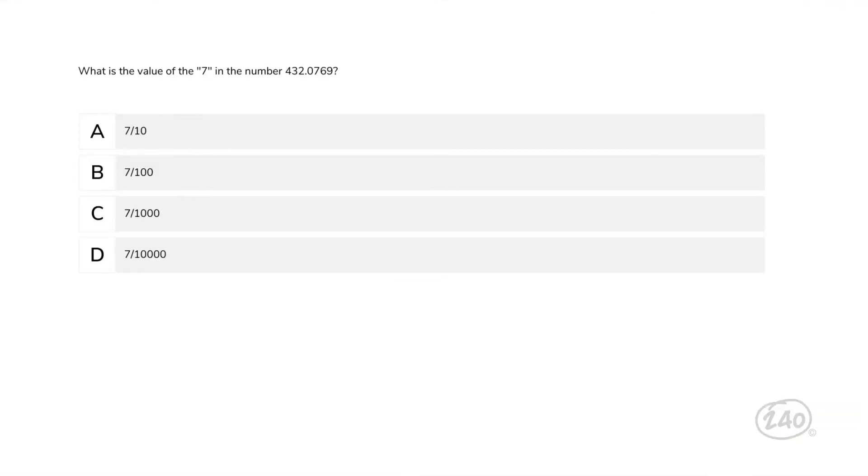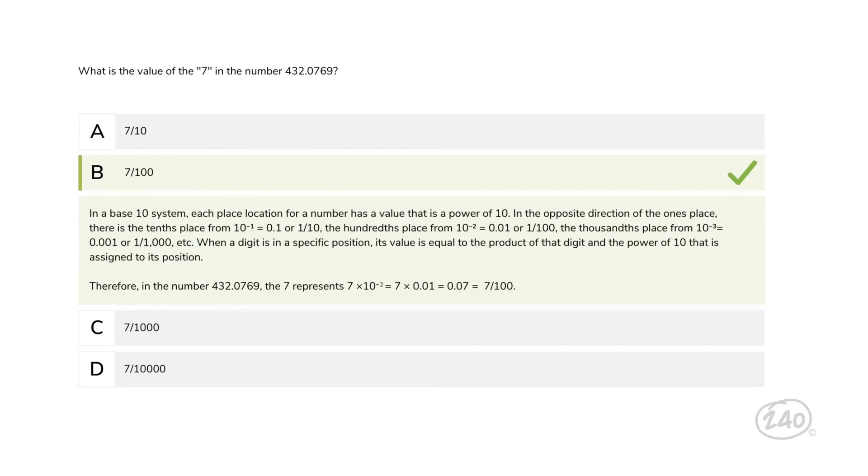Remember way back in the beginning of this video when we talked about place value? Let's look at how that's reflected in a question. What is the value of the 7 in the number 432.0769? The 7 is the second number after the decimal, so it has the value of 7 hundredths, or 7 divided by 100. So this is the correct answer.